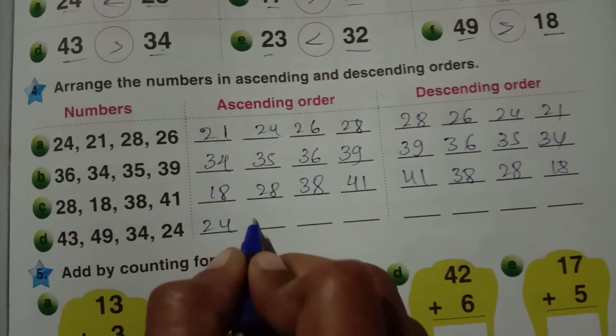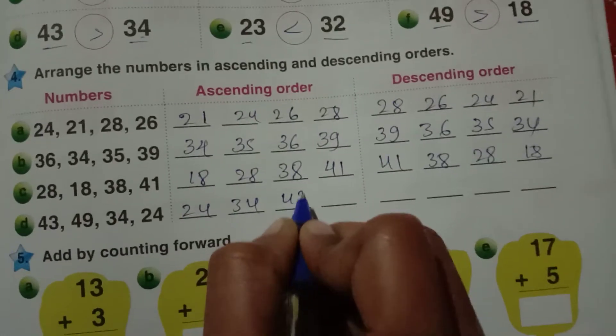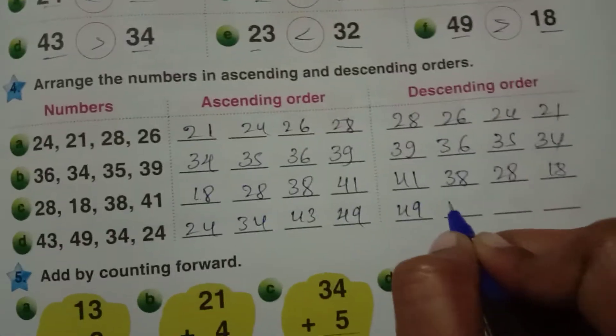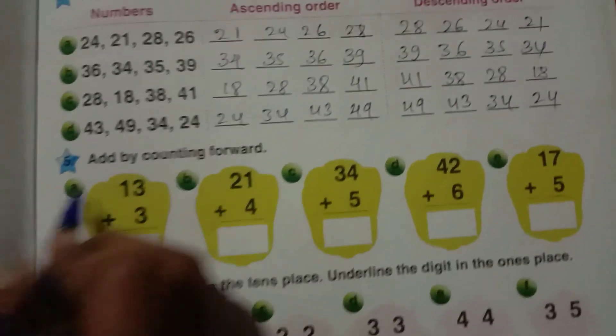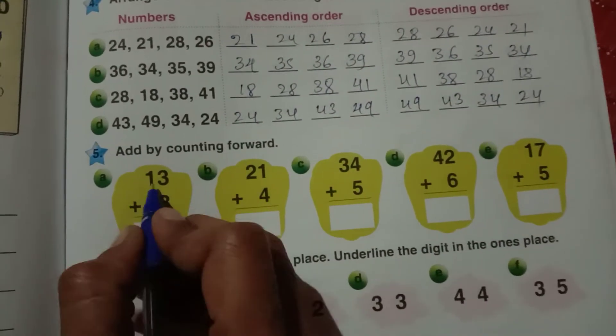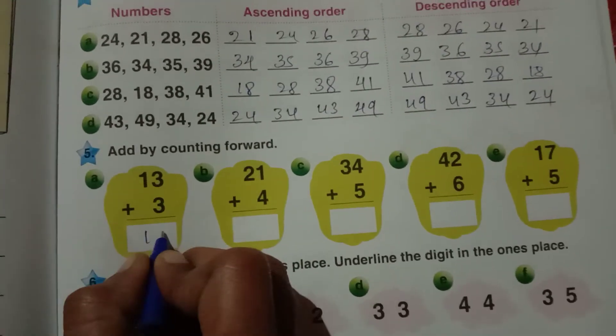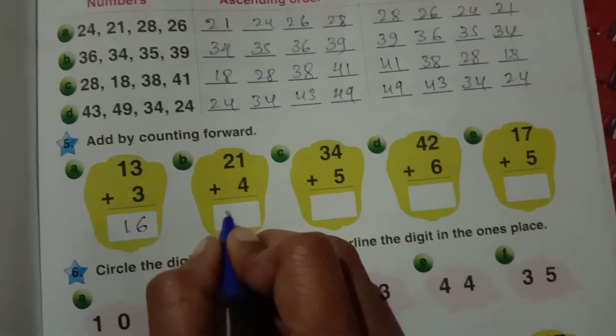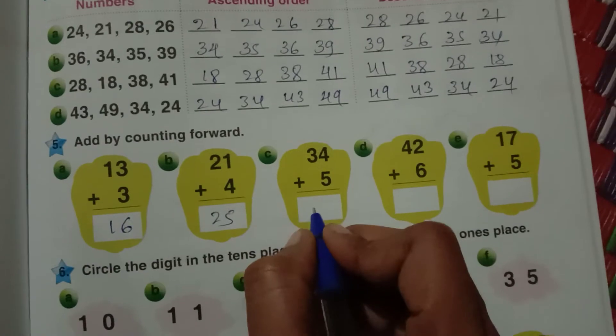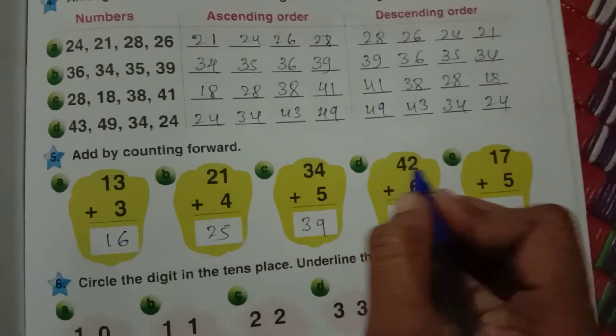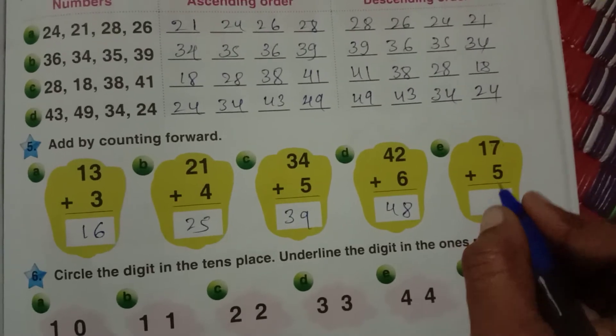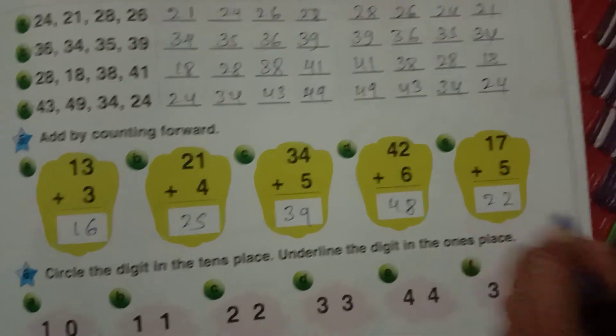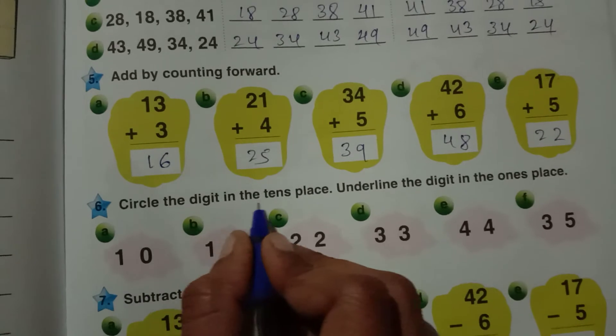24, 34. Next, add by counting forward. 13 plus 3 is 16. 21 plus 4 is 25. 34 plus 5 is 39. 42 plus 6 is 48. 17 plus 5, how much? 7 plus 5 is 12, so 22. Circle the digit in the tens place, underline the digit in the ones place.